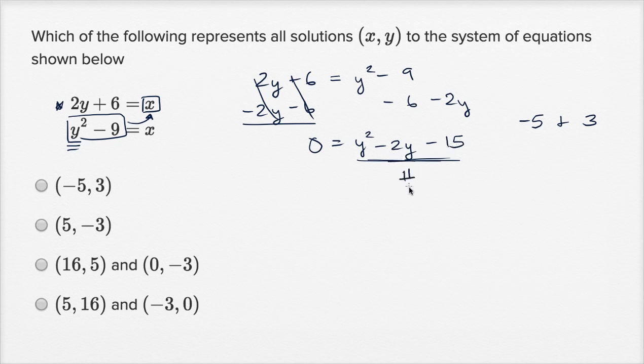If what I'm doing right now looks a little bit like voodoo to you, I encourage you to review factoring quadratic expressions on Khan Academy. But we now know how to factor this. It's going to be zero equals (y - 5)(y + 3).